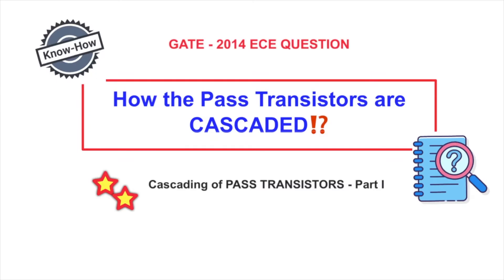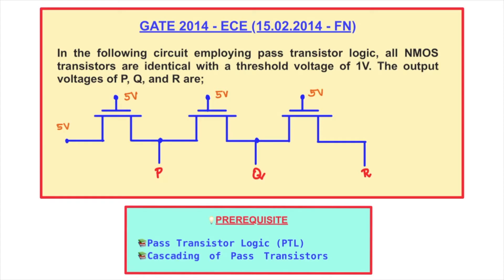Welcome to the next video on the Know-How series. In this video we will understand how pass transistors are cascaded. This is going to be the first part of the video, wherein we are going to take a GATE 2014 easy question paper. The question asks: in the following circuit employing pass transistor logic, all N-MOS pass transistors are identical with a threshold voltage of 1 volt. The output voltages of P, Q, and R have to be found out.